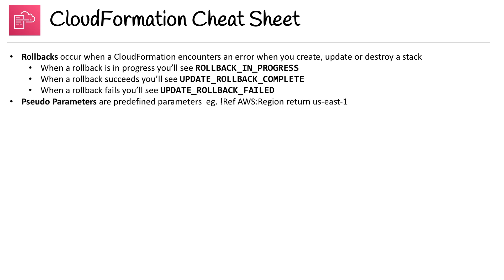Pseudo parameters are predefined parameters defined by AWS. For example, referencing AWS::Region would return something like 'us-east-1.' These are AWS predefined parameters you can use in your templates.